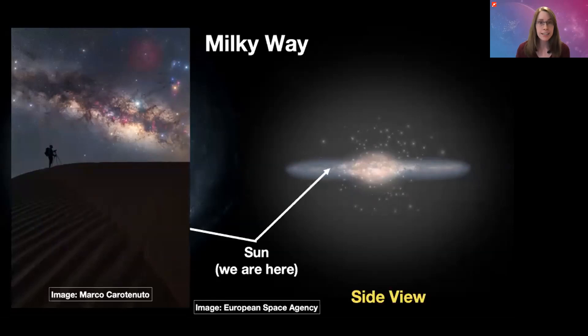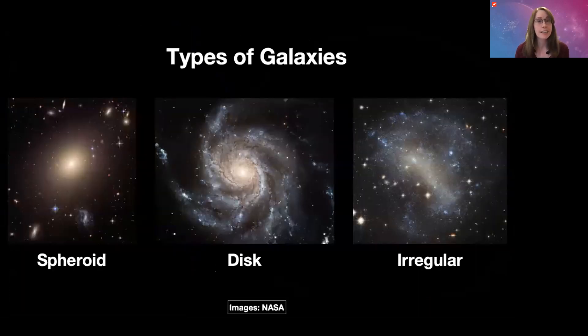The Milky Way is a spiral galaxy, but that's not the only kind of galaxy there is. Broadly speaking, we can divide galaxies into three different classes.